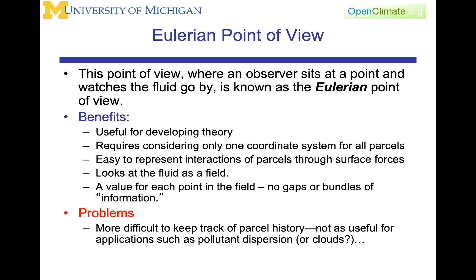The Eulerian approach uses a field approach — it looks at the fluid as a field. There will be no gaps or bundles of information in the fluid; it's homogeneous. The problems: it's more difficult to keep track of parcel history. It's not as useful for applications such as pollutant dispersion. If you think about clouds as objects, or other things in the atmosphere, those problems are perhaps better represented by parcel methods.